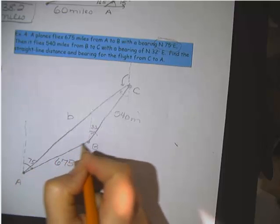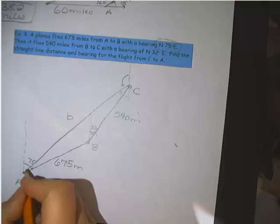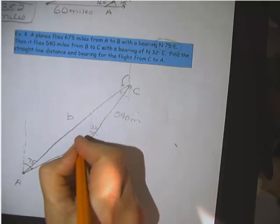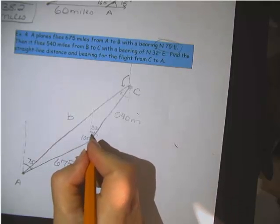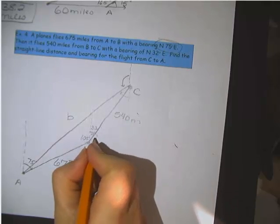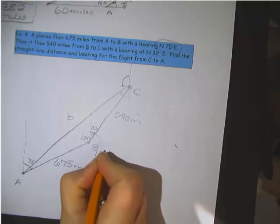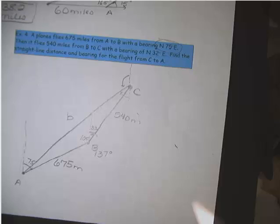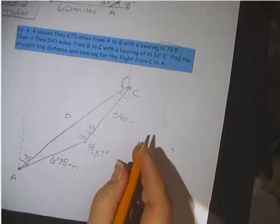Here we have some consecutive interior angles. So if this angle is 75, this one would be 105. And if we add it to the 32, that angle B there, I'm going to write it down, would be 137 degrees for all of angle B.